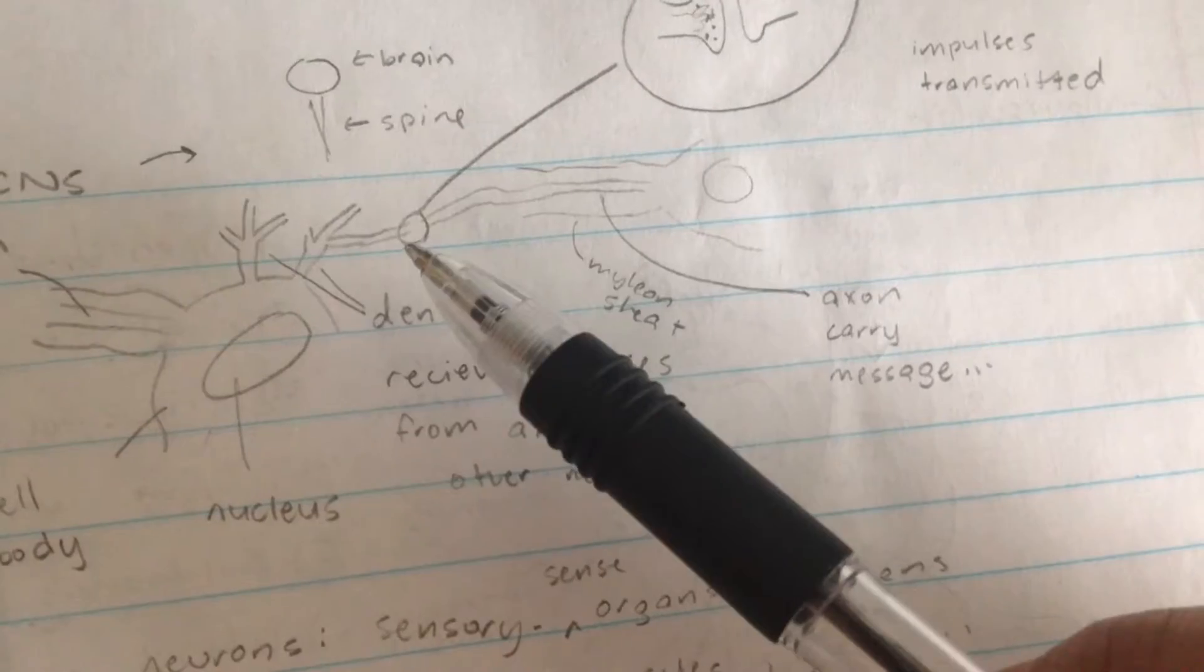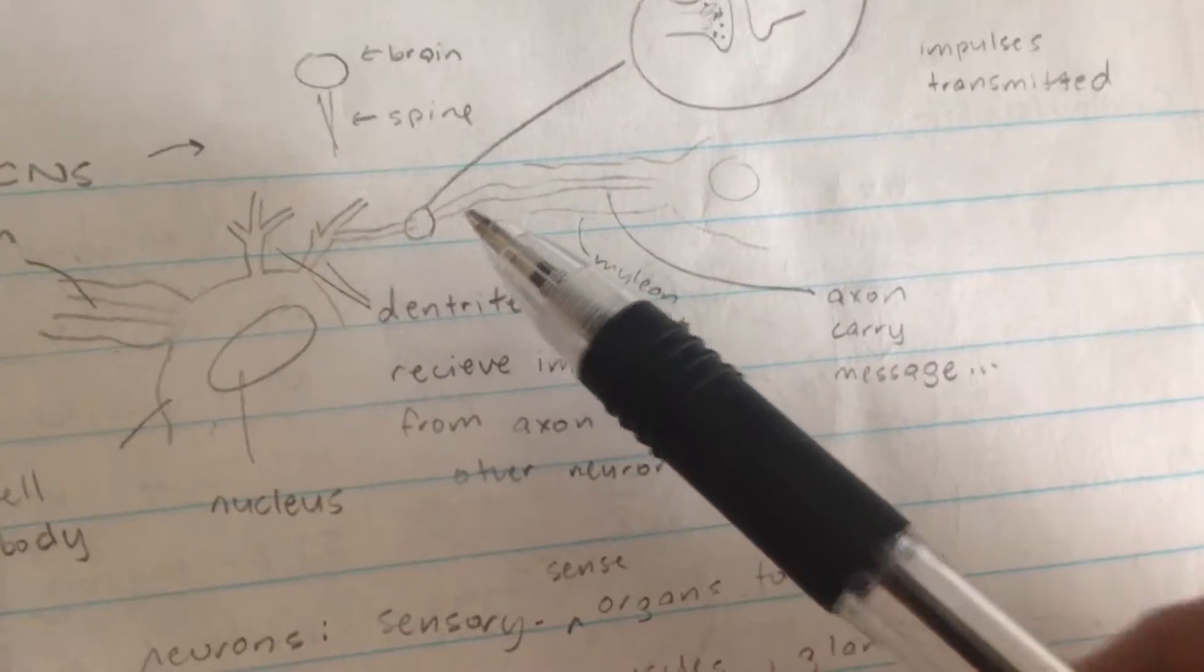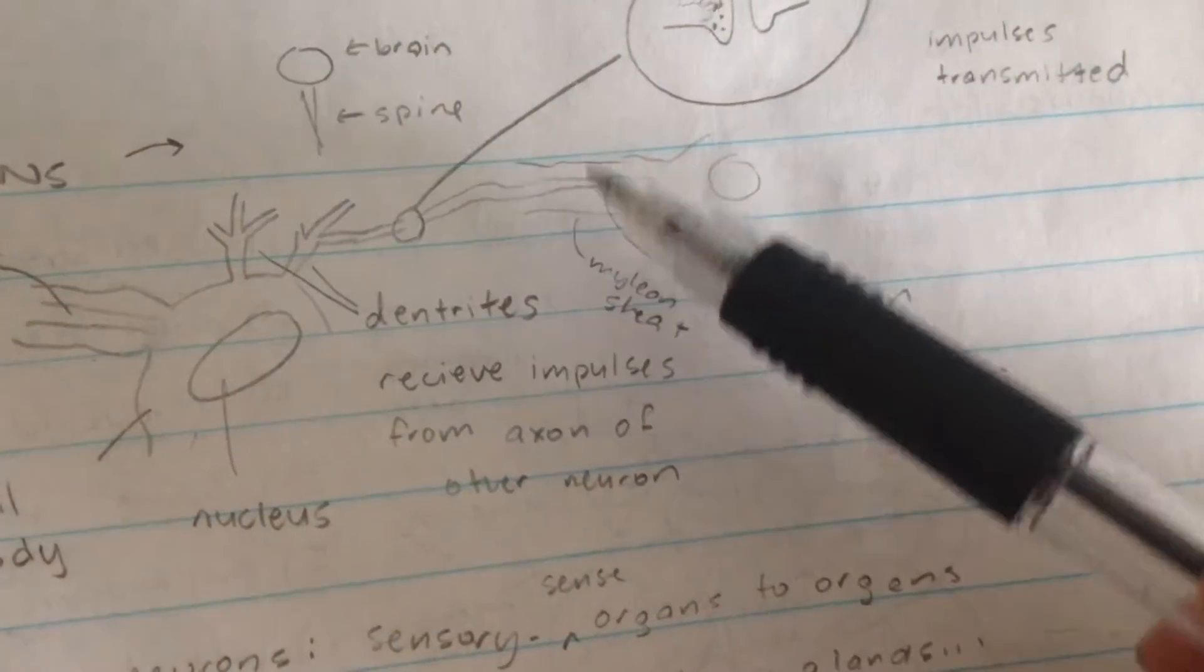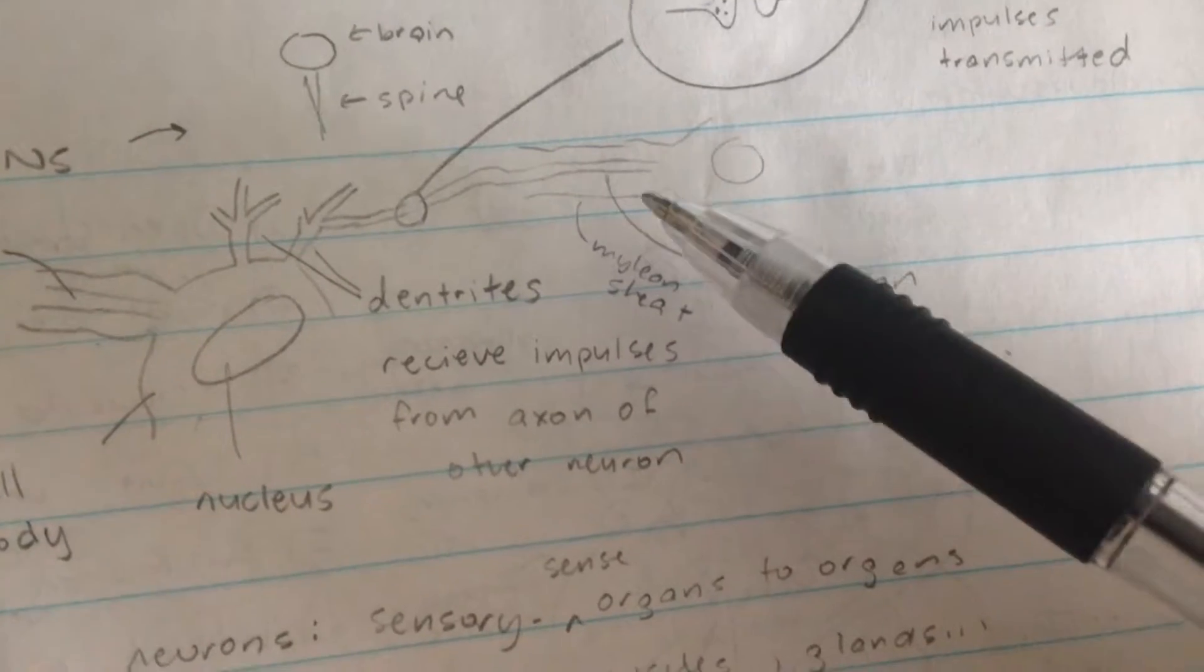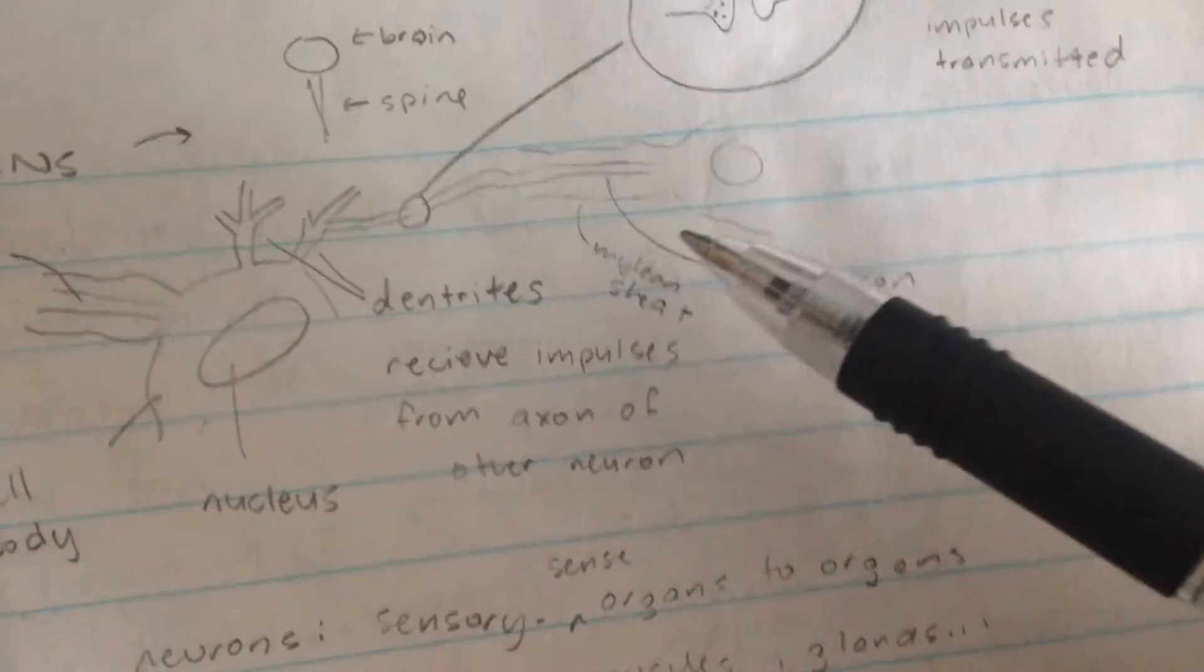So we have the dendrite and axon connection over here. And let's just say that the axon here is protected by myelin sheath.